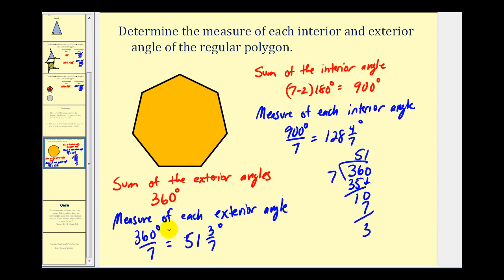Keep in mind this only works because we know it's a regular polygon. If it's not regular, each interior and exterior angle may not be the same. I hope you found this helpful. Thank you for watching.